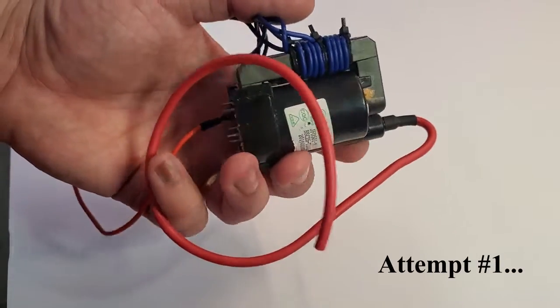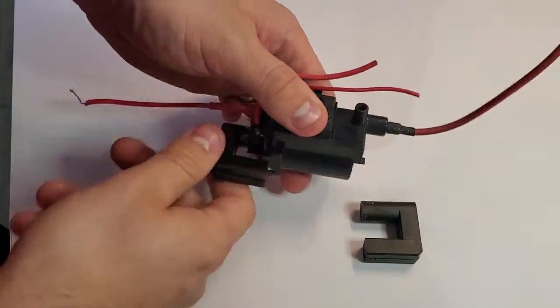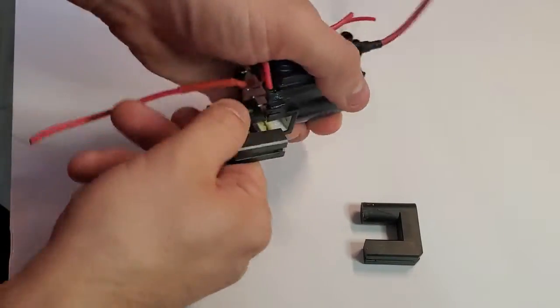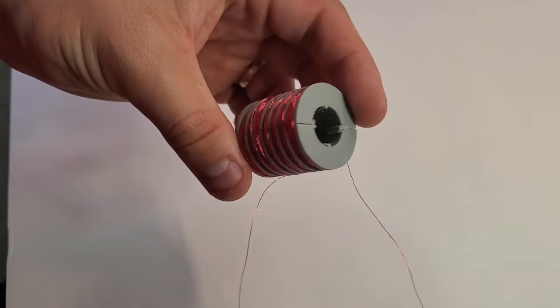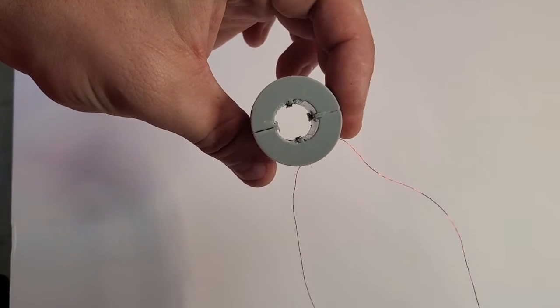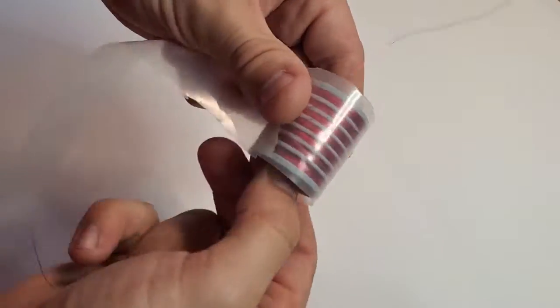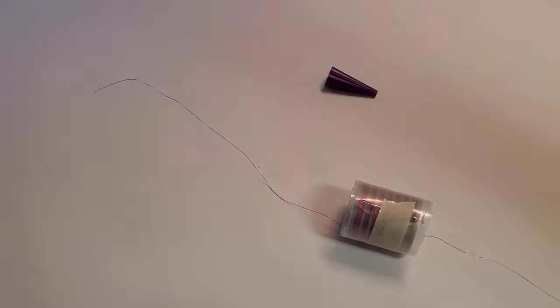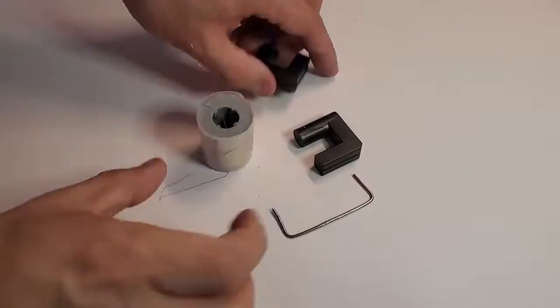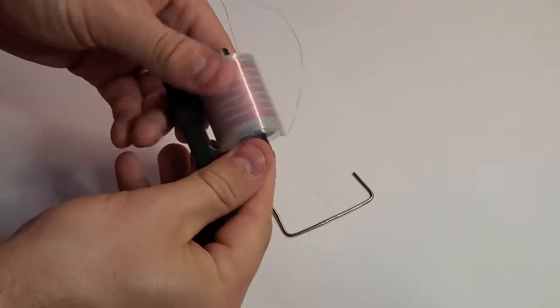The secondary on this flyback burned out a while ago, so I recycled the core from it. Then I 3D printed a bobbin that I wound several thousand turns of 32 gauge wire around. To make sure the secondary didn't arc over to the primary, I wrapped several layers of polyethylene film around it and glued the film in place.